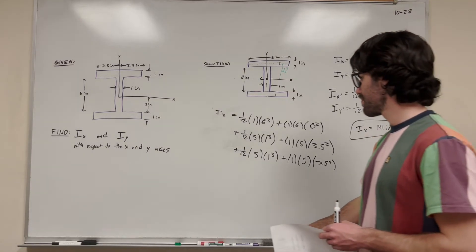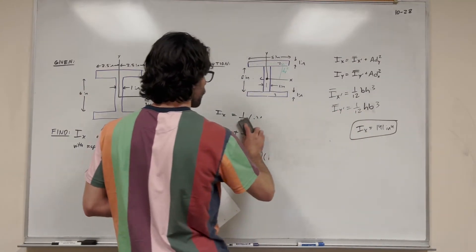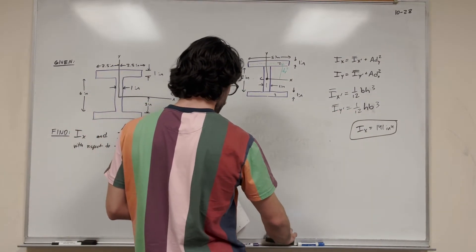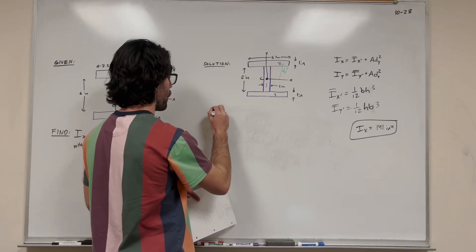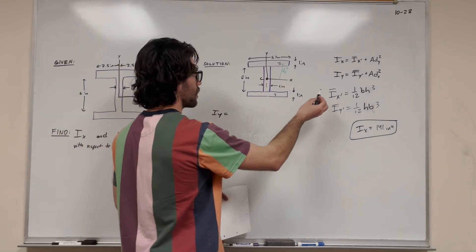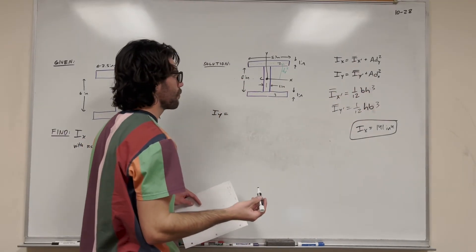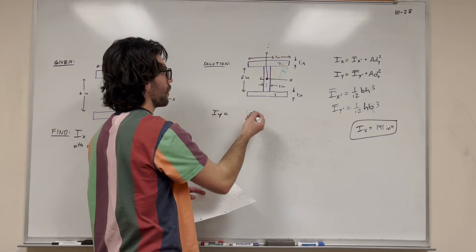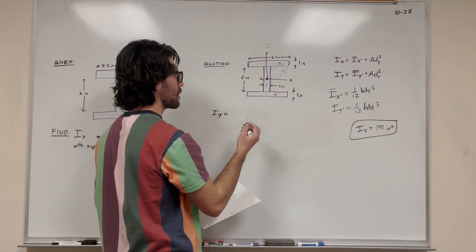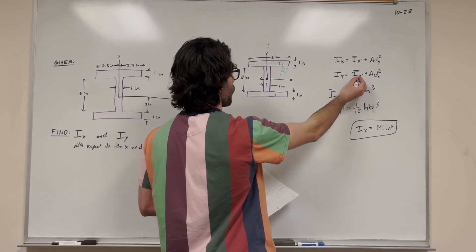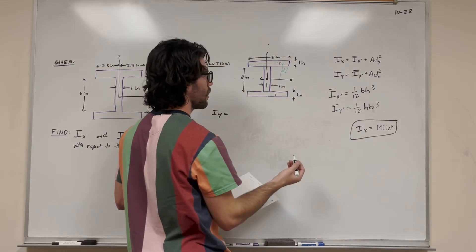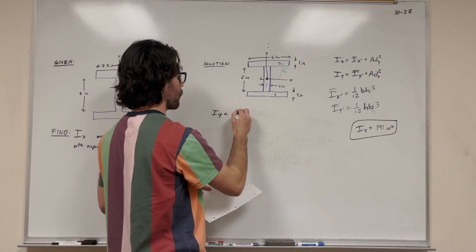Let's move on to Iy. We're doing the same thing, but around the y-axis instead of around the x-axis. We're going to start with I-bar y prime. So we're going to do 1/12, but instead of base height cubed, it's going to be height base cubed.